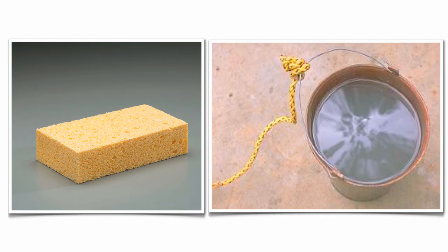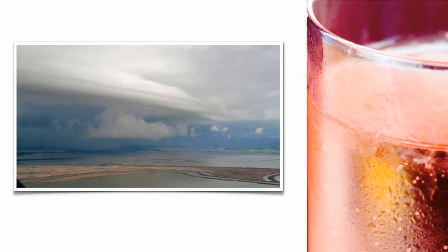When you talk about saturated, think about a sponge. A sponge in a bucket of water is going to soak up as much water as it can — that's what saturated means. In nature, clouds and precipitation are a telltale sign that air is saturated. You can also see it in the summertime: take a cold glass of soda out of the refrigerator, and you'll get little beads of sweat on the outside of that glass. The air touching that cold glass has cooled to what we call the dew point.